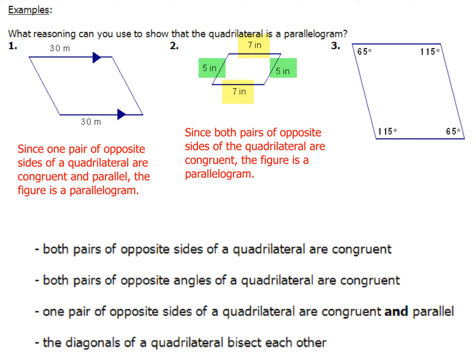Check out our last example, number three. Here I've got information about all of the angles on the inside of my figure. You've got this angle 65 — so is this one up here; they're opposite angles. And then check out these angles: I've got 115 right there and 115 right there. Which one of my four reasons is that going to be?